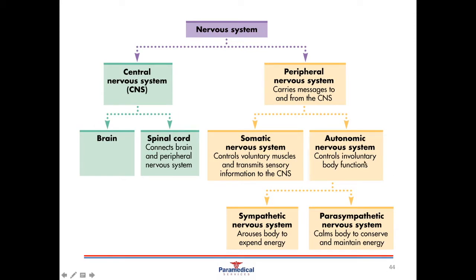A further subdivision from the autonomic nervous system is the sympathetic nervous system and the parasympathetic nervous system. The sympathetic nervous system is the body's system that gets it aroused and ready for action. It's also known as the fight or flight response, when mass amounts of adrenaline are released into the body and it primes the body for action — either fighting for its life or running away.